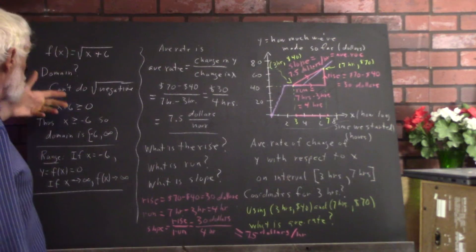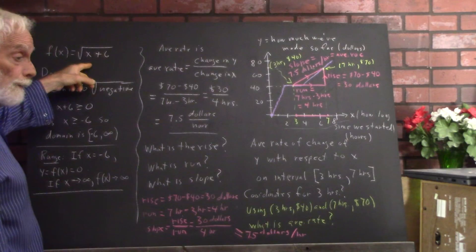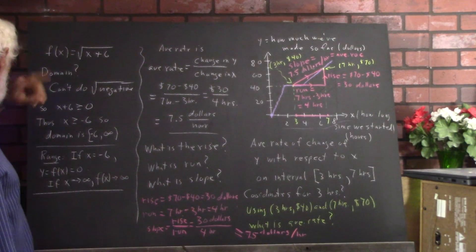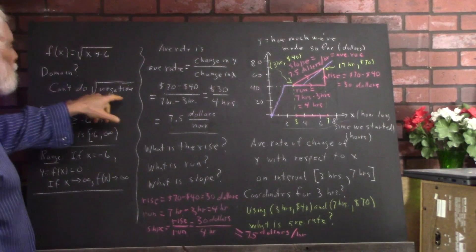Well, the domain is restricted. You can't let x equal like negative 10 because negative 10 plus 6 would be negative 4 and the square root of negative 4 is not a real number. So you can't do the square root of a negative.